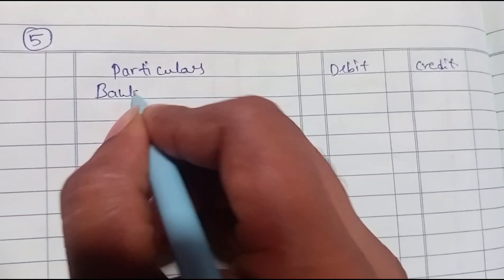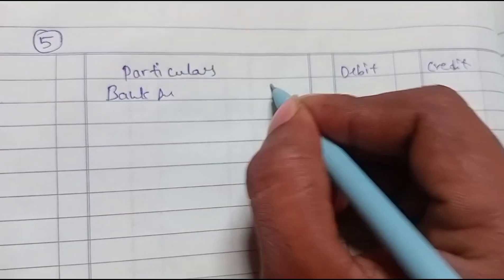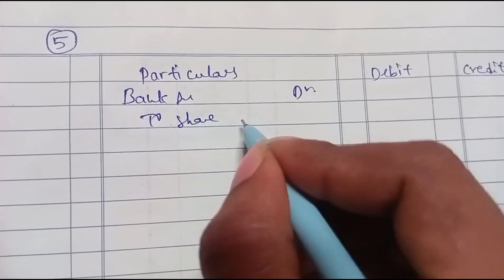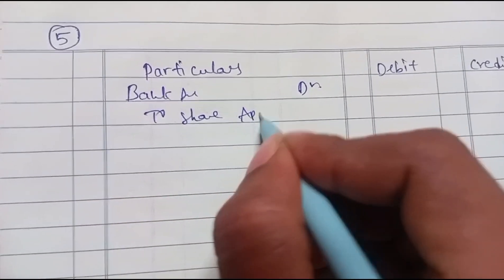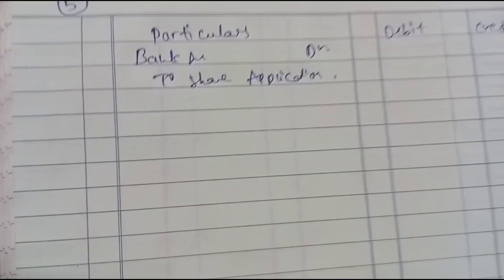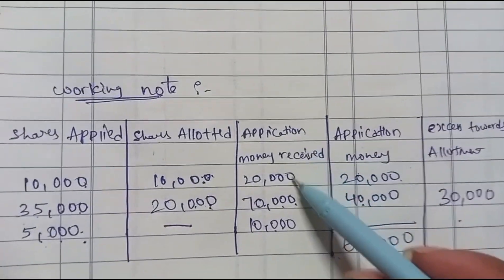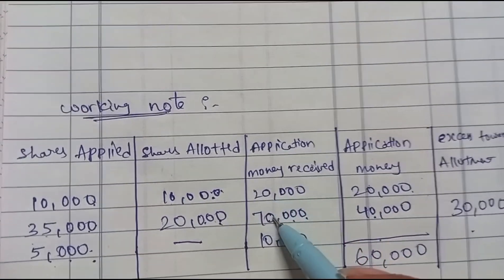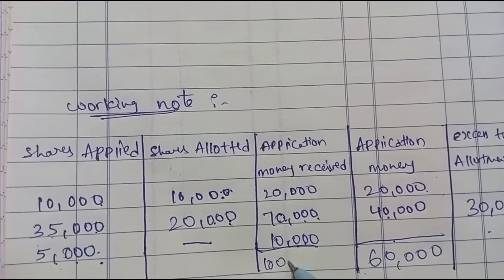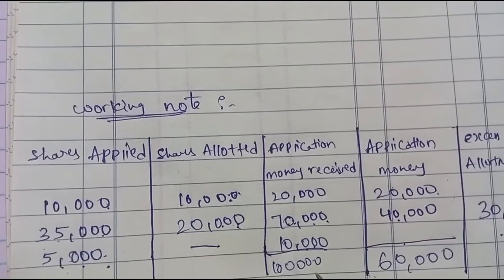First journal entry: Bank Account debit to Share Application Account. This records the full application money received — 20,000 plus 70,000 plus 10,000 — total 1,00,000 rupees received.